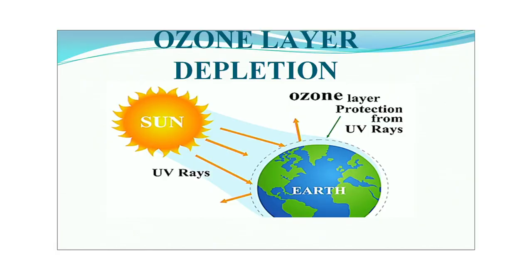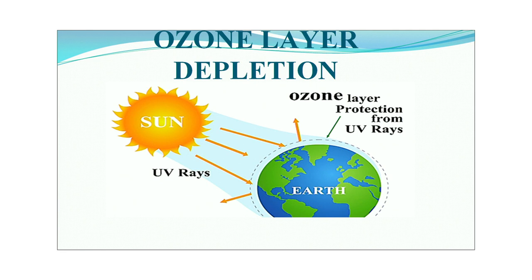Our next topic is ozone layer depletion. UV light from solar radiation strikes our earth's surface, and the ozone layer acts as a natural shield protecting us. The ozone layer is found in the form of a very thin layer in the lower portion of the stratosphere, from about 20 to 30 kilometers from the earth's surface, and 90 percent of atmospheric ozone is present in this layer.